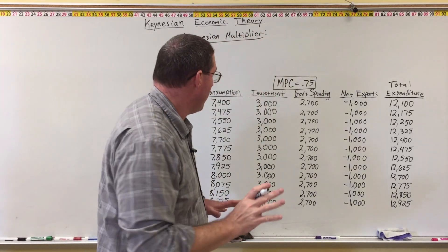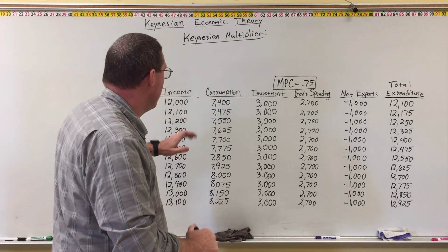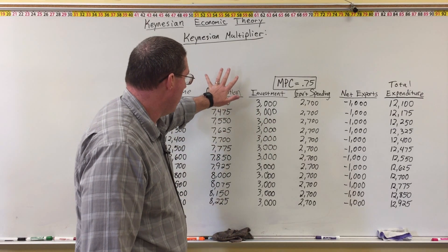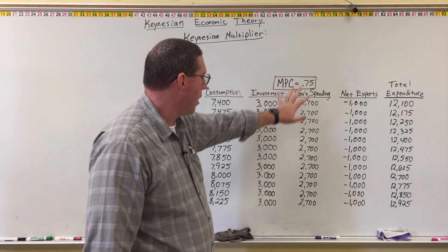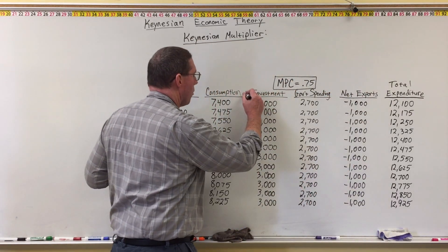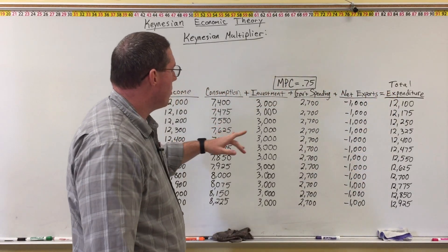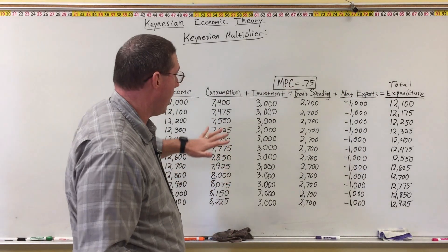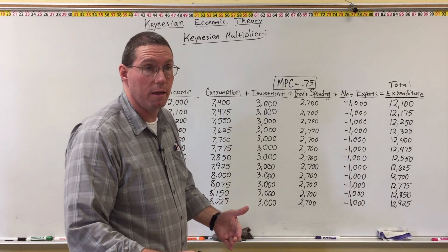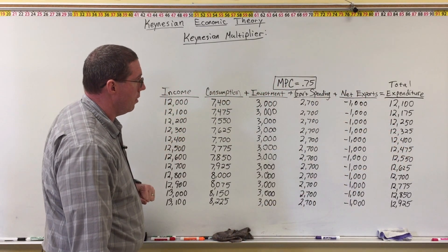Now we just finished, in the last lesson, we began understanding Keynesian Economic Theory using this table of values here. So we have consumption in the economy, investment in the economy, government spending, and net exports in the economy, and when you add up these four items, we get total expenditure. Total expenditure and income in the economy should be equal because they're measuring the same thing — how much is spent in the economy is going to be the same as the income for the people in the economy.